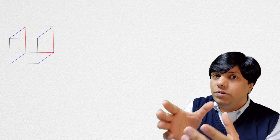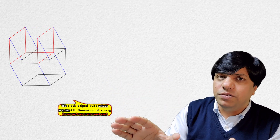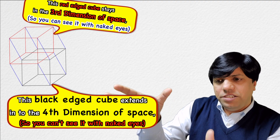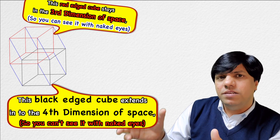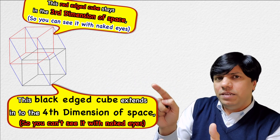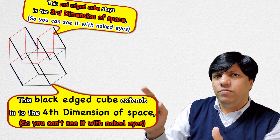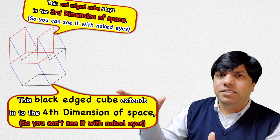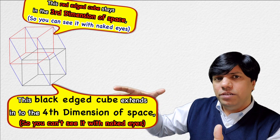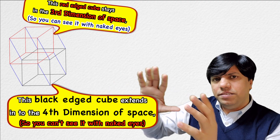Just like we constructed a cube by extending the square into a new dimension, in a similar way we construct our tesseract. We take one cube, then take another cube, and extend it into the fourth dimension. Now we cannot see the fourth dimension — imagine that the second cube is invisible to you because it goes into the fourth dimension. These two cubes, the cube in our third dimension and the cube in the fourth dimension, are connected by eight connectors. This construct is a tesseract.